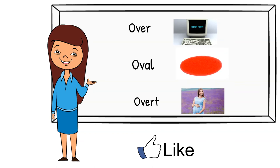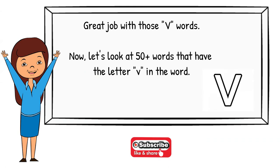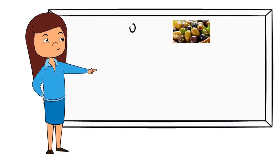Great job with all of those V words. Now we're going to look at these 50 words that have the letter V in the word. So those first ones were just a warm up. Here is olive. I love to have olives with my dinner.